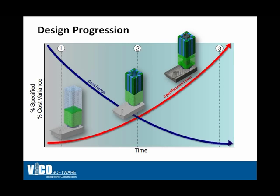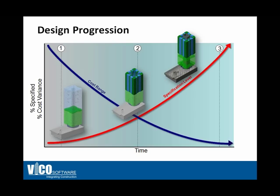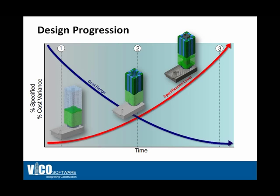Traditionally, going through these design stages, the specification level is increased by releasing design sets — starting with the concept, then going to schematic design, then design development, and then the construction documentation set. The problem with this methodology is that because it's paper-based, you cannot do that too often. The frequency of releasing a new design set is limited, and cost effectiveness must be considered, so there are only so many design iterations you can go through with a paper-based approach.